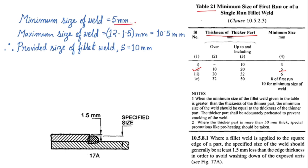Next, maximum size of weld. In IS code, they have not given directly what should be the maximum size of the weld. But in clause number 10.5.8.1, they have written that when a fillet weld is applied to the square edge of a part, the specified size of the weld should generally be at least 1.5 mm less than the edge thickness.